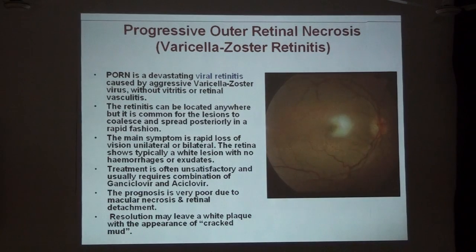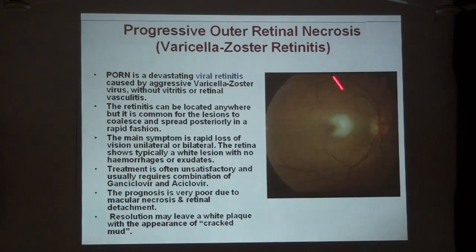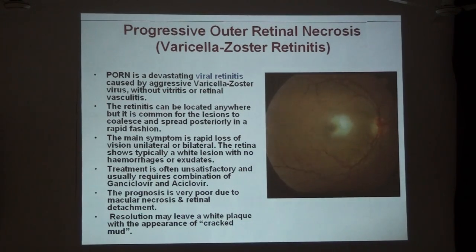Progressive outer retinal necrosis (PORN) is another devastating form of disease caused by very aggressive strains of varicella-zoster virus. Characteristically, this retinitis occurs without any ocular inflammation, hemorrhages, or retinal vasculitis, because it affects very immunodeficient people who are unable to mount any inflammatory response. There is just retinal whitening that coalesces, with a tendency to affect the posterior pole, causing very early vision loss. Vision prognosis is very poor despite treatment, and the mortality rate is as high as 50%. Successfully treated lesions appear as areas of retinal necrosis resembling cracked mud.